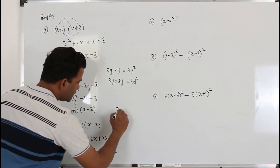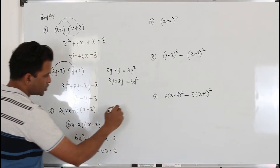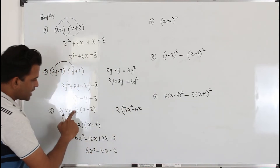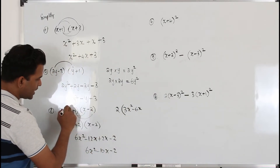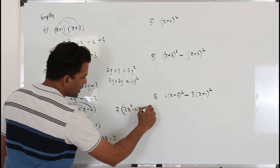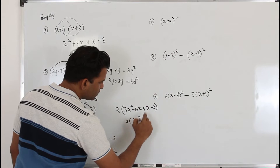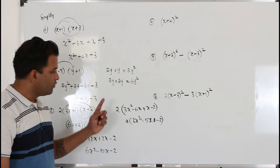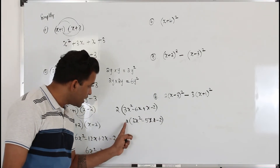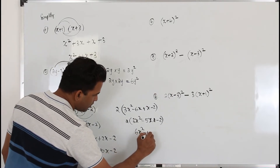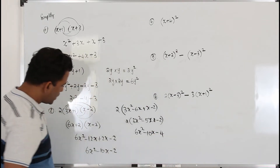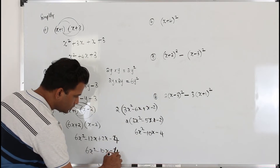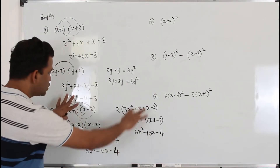Or do not worry about the number outside — just keep it outside and multiply the brackets first. Take 3x and multiply both: 3x square minus 6x. Take positive 1 and multiply both: x minus 2. Simplify: 3x square minus 5x minus 2. Then finally open the bracket and take 2 and multiply everything — you will get 6x square minus 10x minus 4. Note: 2 times minus 2 is 4, not 2. Both ways give the same answer.